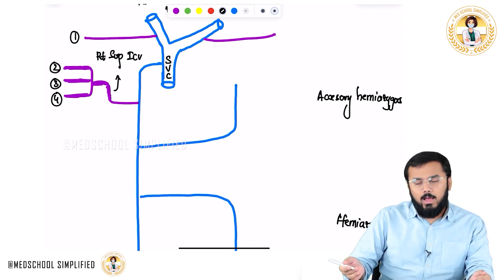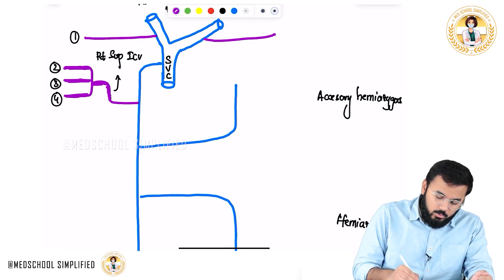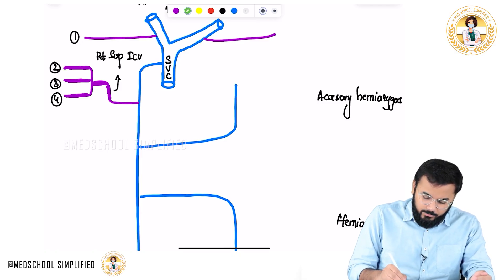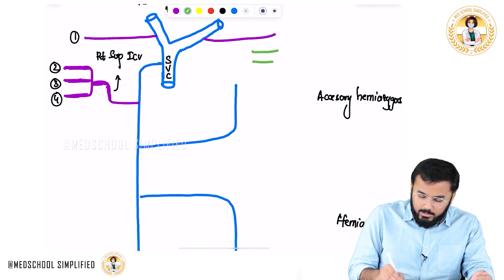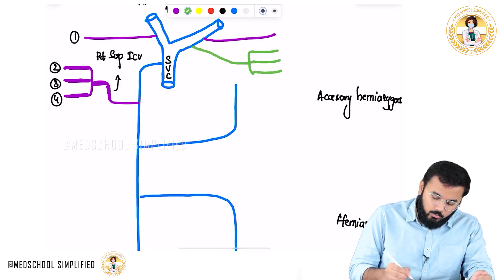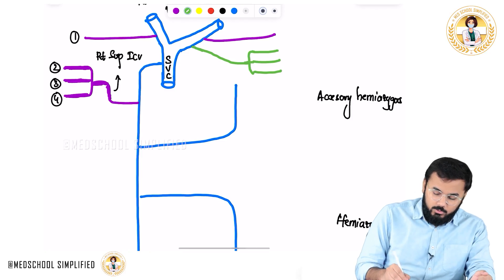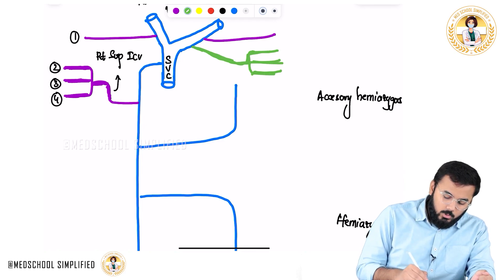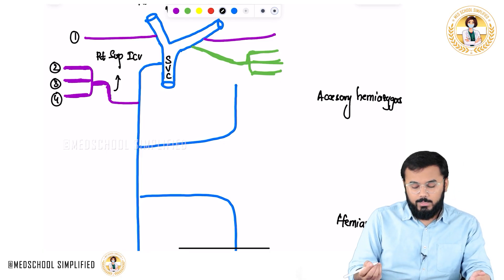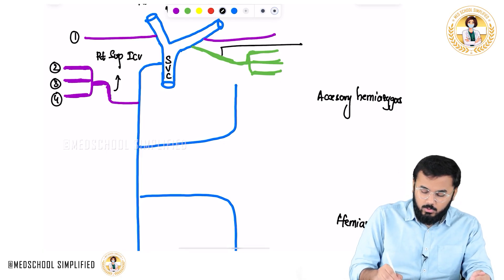The same thing also happens on the left side. On the left side, the second, third, and fourth posterior intercostal veins also join together and form the left superior intercostal vein. However, on the left side, the left superior intercostal vein drains into the left brachiocephalic vein.